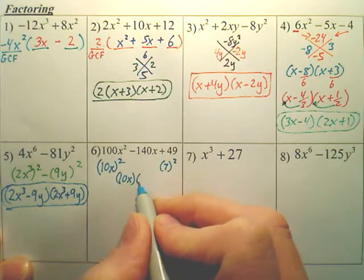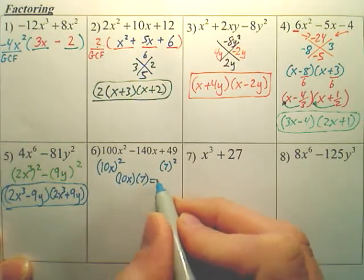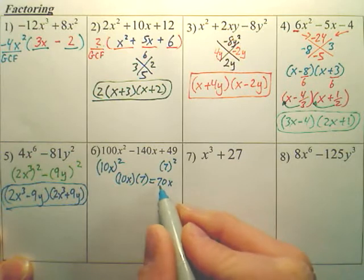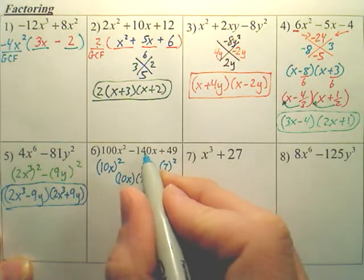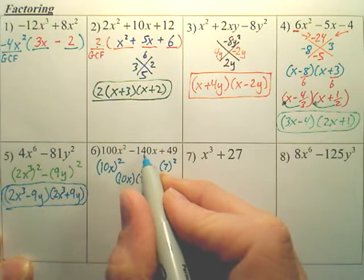and we get 70x. Now, is this half of that? If this number is half of the middle number, we can proceed. If not, we can't factor it.